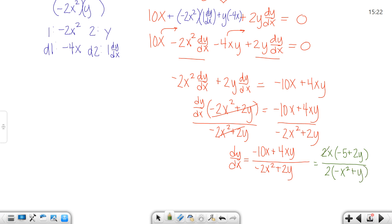The only thing that crosses out, or cancels, is the 2. So my final answer would be X times negative 5 plus 2Y over negative X squared plus Y.